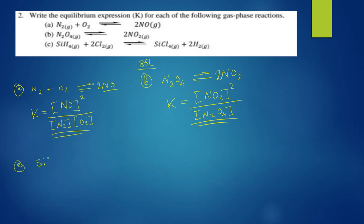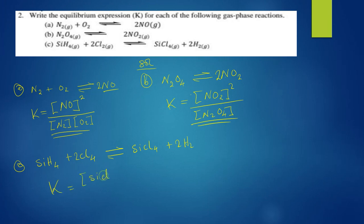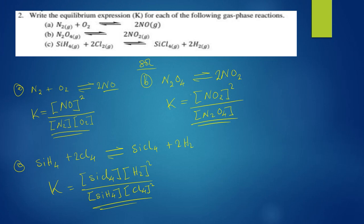For part (c), silicon hydride reacting with chlorine in a reversible reaction also producing hydrogen. The equilibrium expression is K equals the concentration of the products — silicon chloride and hydrogen raised to the power two, its stoichiometric coefficient — over the concentration of the reactants, also raised to the power two. That's it.